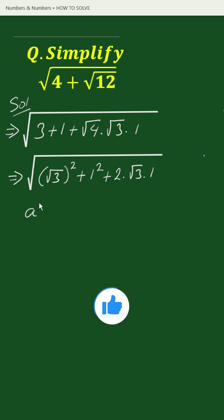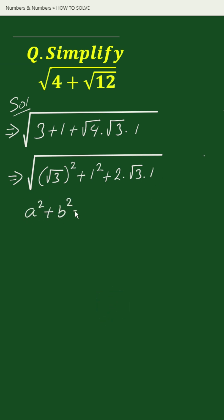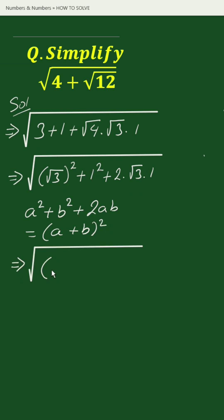...a² + b² + 2ab equals (a + b)². So we can write this as the square root of (√3 + 1)², which simplifies to √3 + 1.